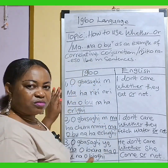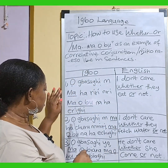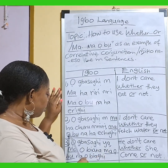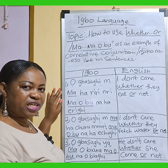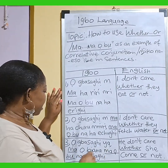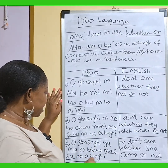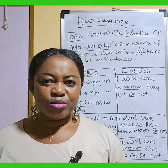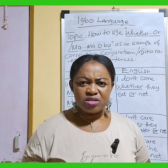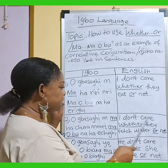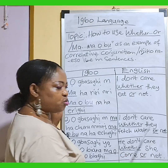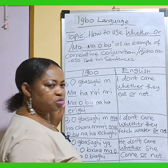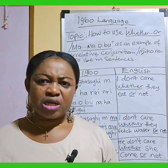Let's see the second sentence. Second sentence says: 'Obasa him ma hariri unri ma obo ma ha erihi.' In English, it means: I don't care whether they fetch water or not.